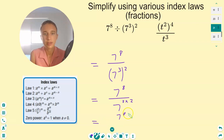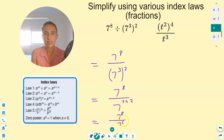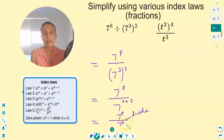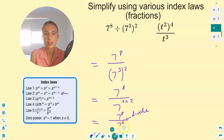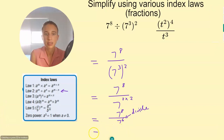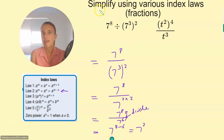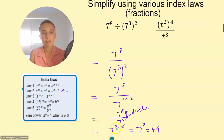So we have seven to the eight over seven to the six. Now when we divide — that fraction sign means divide — when dividing terms with indices, we subtract the powers. That's law two. So this becomes seven to the eight, and bringing that power up we're taking it away: eight minus six gives us seven squared. And if it said evaluate, you would just write 49. But simplified, we've condensed all those indices to get seven squared.